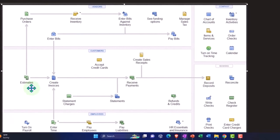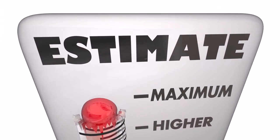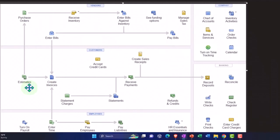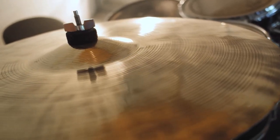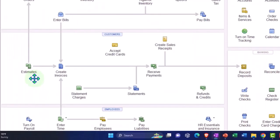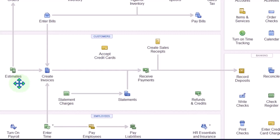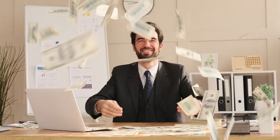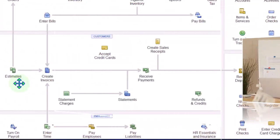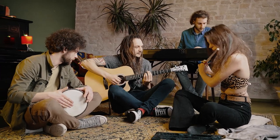If someone is calling in for an estimate about renting equipment — possibly for a band session on a weekend — do we want each guitar, each piece of drum kit, and each amp listed separately for complete customization? Usually no, because that's too chaotic a system. If they don't clear a minimal amount of rental income, it's probably not worth our time to rent the equipment.